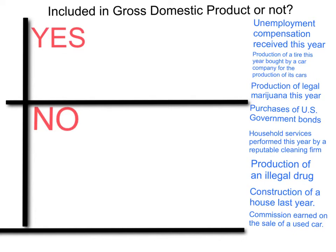So let's take a look at all the choices here. I've created a box with the yeses and the noes, so the yeses would be everything that would be included in this year's GDP.